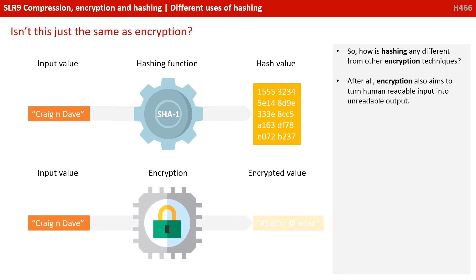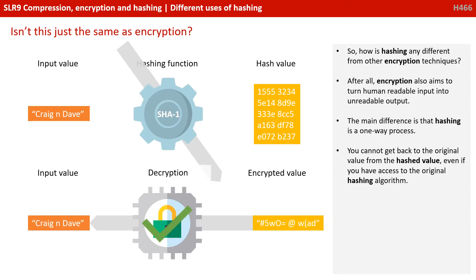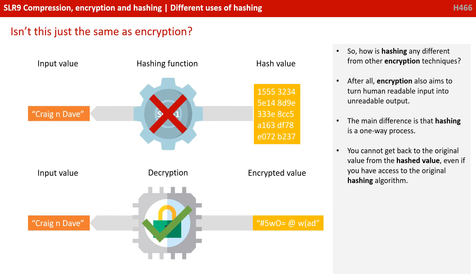You might be asking now, how is hashing any different from other encryption techniques that we discussed in earlier videos? After all, encryption also aims to turn human-readable input into unreadable output. The main difference is that hashing is a one-way process. You cannot get back to the original value from the hashed value, even if you have access to the original hashing algorithm. And this is the important difference.